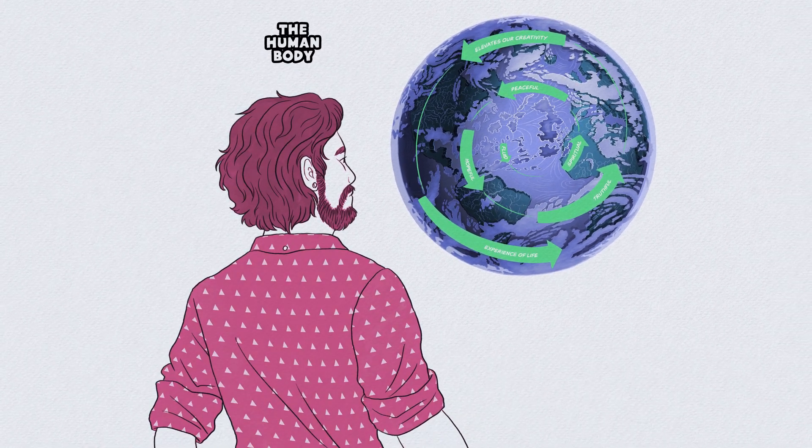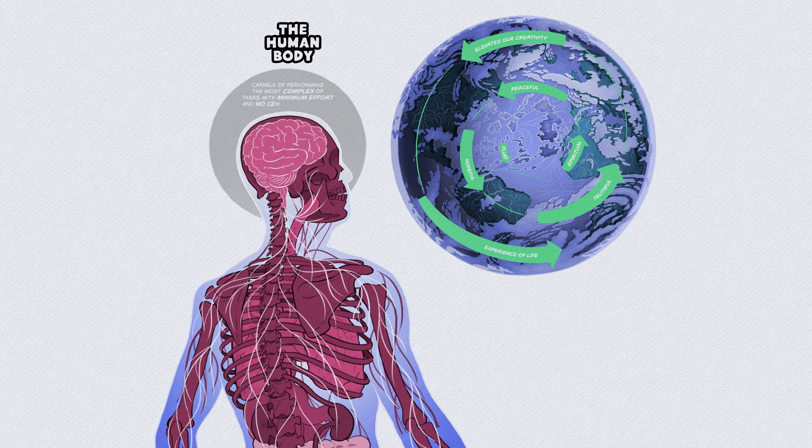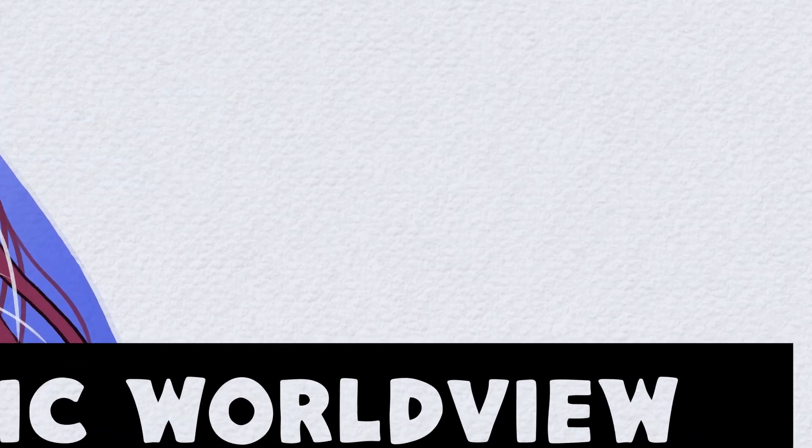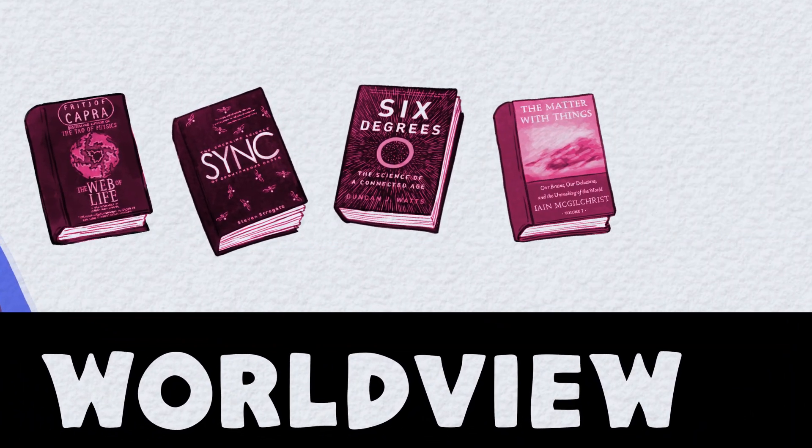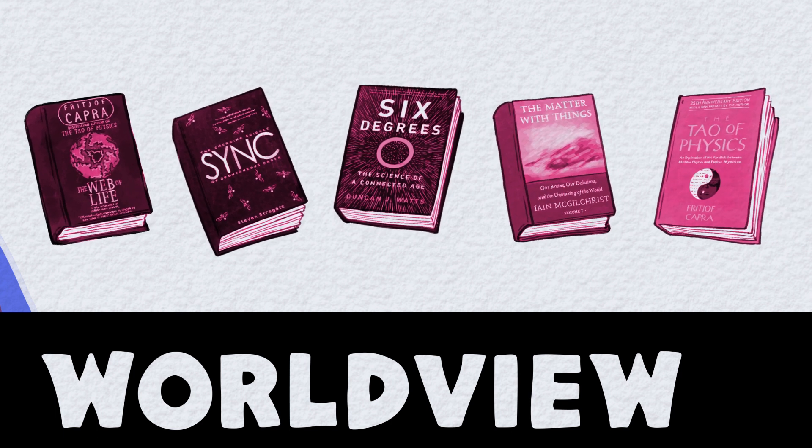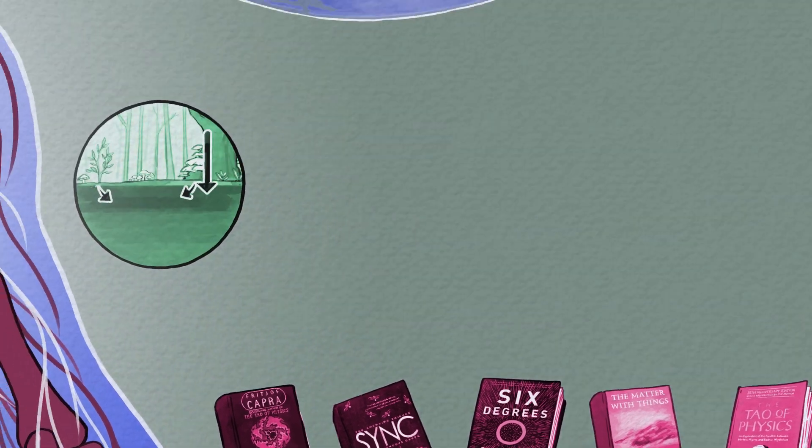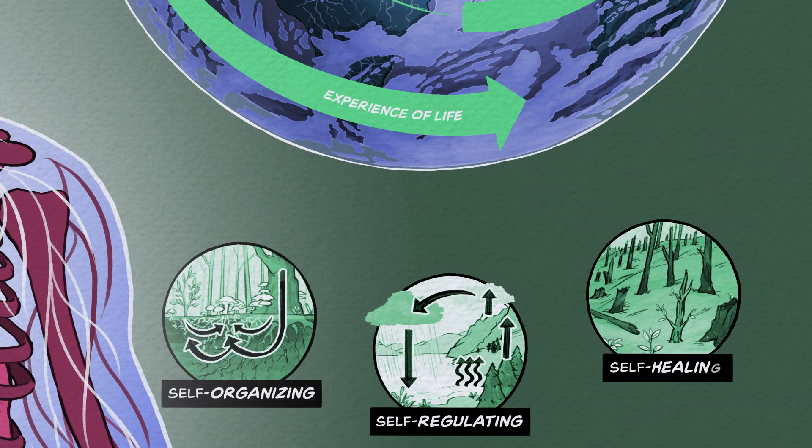The human body is capable of performing the most complex of tasks with minimum effort with no central command. Recent developments in non-linear sciences such as systems theory, network theory, cognitive theory, and quantum mechanics are supporting our observation that, like the human body, Earth is a cognitive, self-organizing, self-regulating, self-healing living system.